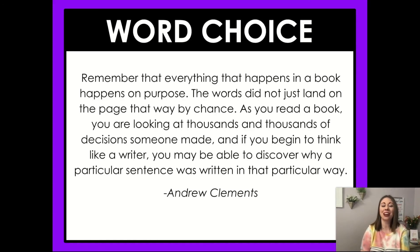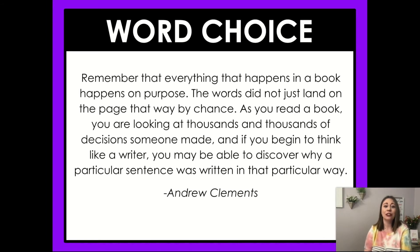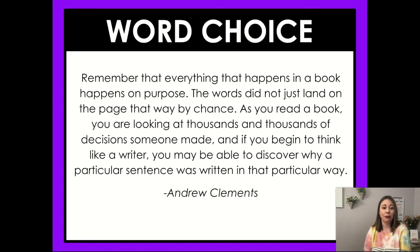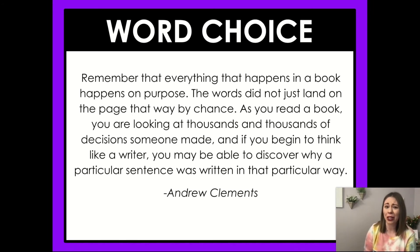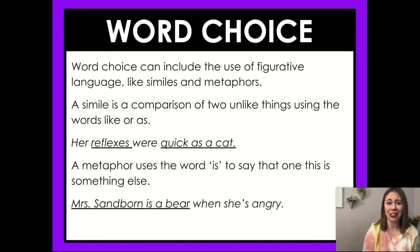Today we are focusing on word choice. I'm going to start with a quote from Andrew Clements, the author of our story. He says, 'Remember that everything that happens in a book happens on purpose. The words did not just land on the page that way by chance. As you read a book, you are looking at thousands and thousands of decisions someone made. And if you begin to think like a writer, you may be able to discover why a particular sentence was written in that particular way.' So that's what we're focusing on today — why did Andrew Clements put the words on the page the way he did? Why did he choose to describe things the way he did?